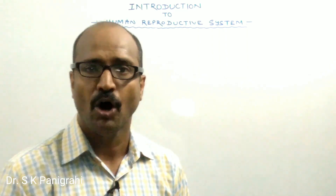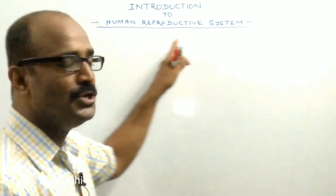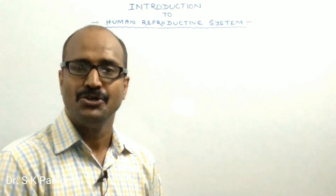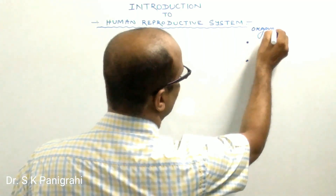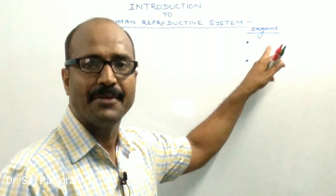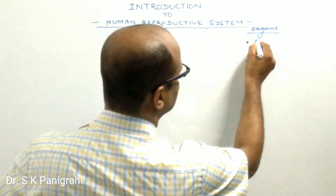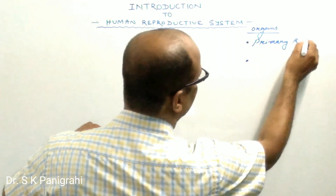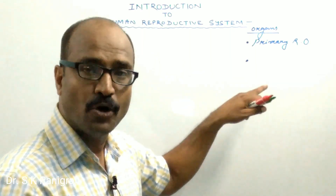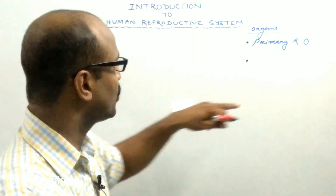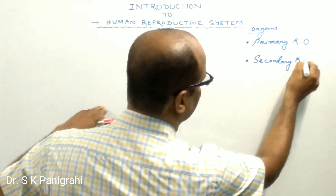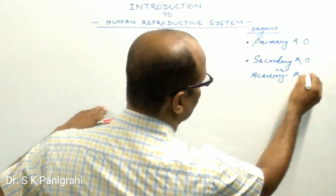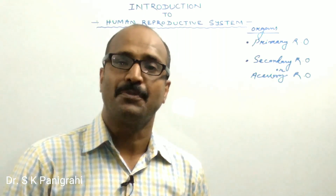Those systems involved in the reproduction, this system is known as the reproductive system. Those organs involved in reproduction are known as the reproductive organs. The reproductive organs may be two types. Those organs that produce the male and female gametes are known as the primary reproductive organs. And those organs that help or assist the process of reproduction are known as the accessory reproductive organs or secondary reproductive organs.